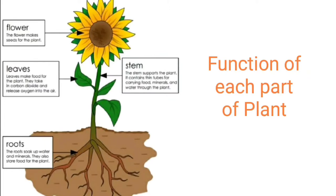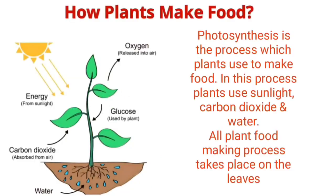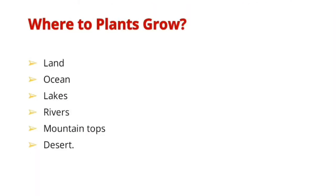Friends, now you are able to know the importance of each part of the plants. Next we'll see how plants make their food. Plants make their food through a process known as photosynthesis. They use oxygen, water, and carbon dioxide to produce food, and in return they give us clean air or oxygen.